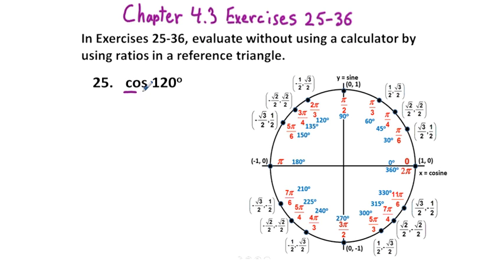Here we have the cosine of 120 degrees. When we say reference triangle, what we do is we go to where 120 degrees is on a unit circle. We create the reference triangle by simply drawing a vertical line segment down to the x-axis. To make the fully complete triangle, we draw a hypotenuse from that point right to the origin. There we have that in red, and so this blue is going to be our sine.